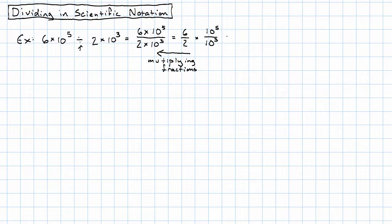Right? 6 divided by 2, that's 3. 10 to the fifth divided by 10 to the third, that's 10 to the 5 minus 3. So this is just 3 times 10 to the second.